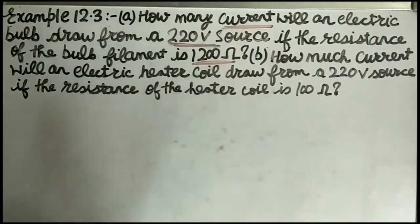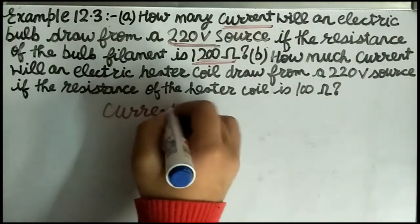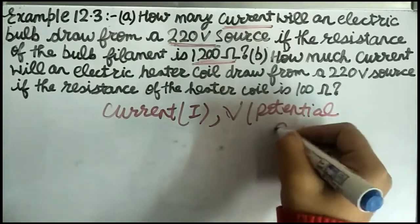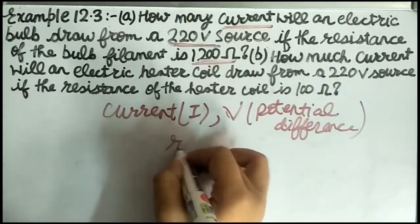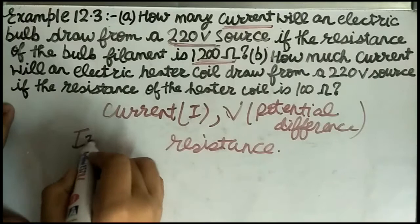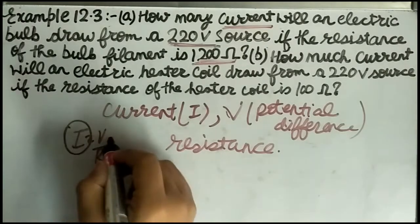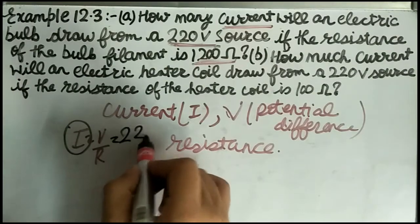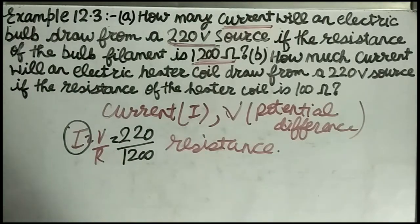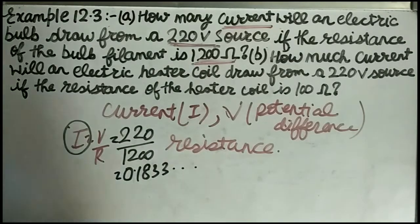We need to find current. We have potential difference and resistance. By Ohm's law, I = V / R. Potential difference is 220 volt and resistance is 1200 ohm. So I = 220 / 1200, and our answer is approximately 0.1833 ampere.